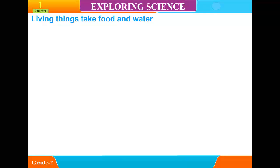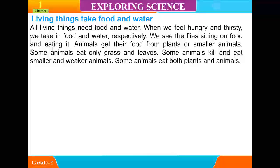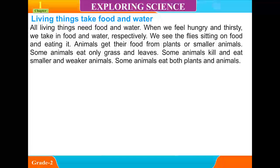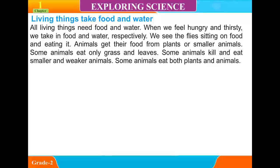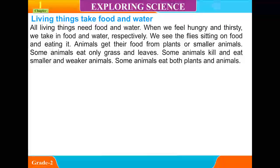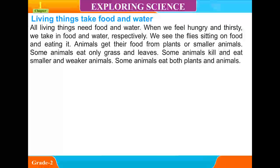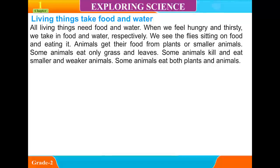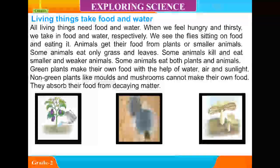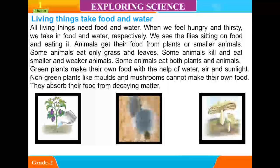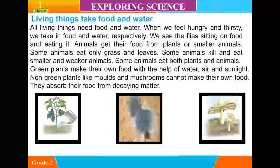Living things take food and water. All living things need food and water. When we feel hungry and thirsty, we take in food and water respectively. We see flies sitting on food and eating it. Animals get their food from plants or smaller animals. Some animals eat only grass and leaves. Some animals kill and eat smaller and weaker animals. Some animals eat both plants and animals. Green plants make their own food with the help of water, air and sunlight. Non-green plants like moss and mushrooms cannot make their own food — they absorb their food from decaying matter.